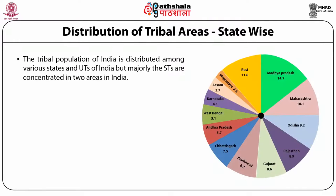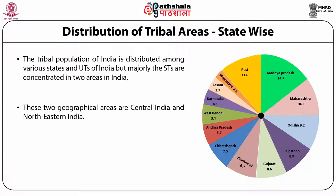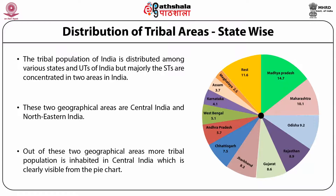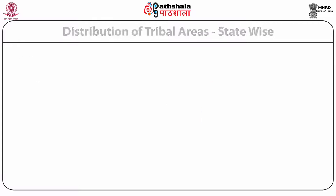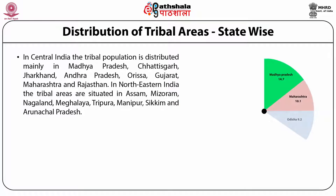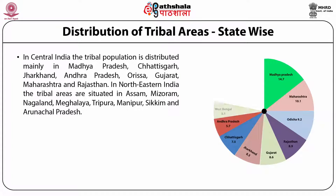The tribal population of India is distributed among various states and UTs of India, but majorly the STs are concentrated in two areas — Central India and Northeastern India. Out of these two areas, more tribal population is inhabited in Central India, which is clearly visible in the map. In Central India, the tribal population is distributed mainly in Madhya Pradesh, Chhattisgarh, Jharkhand, Andhra Pradesh, Odisha, Gujarat, Maharashtra and Rajasthan.